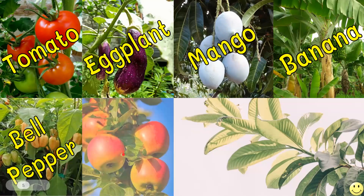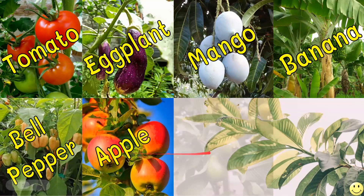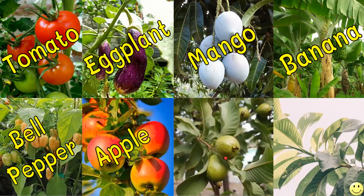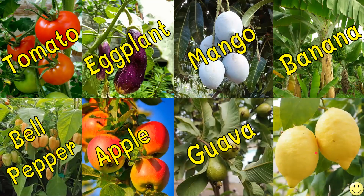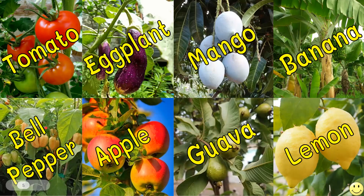How about this? An apple. Great. How about this one? Correct, it is guava. How about this? Very popular these days? Yes, it's a lemon. Let's name one more time these plants, kids. Tomato, eggplant, mango, banana, bell pepper, apple, guava, and lemon.